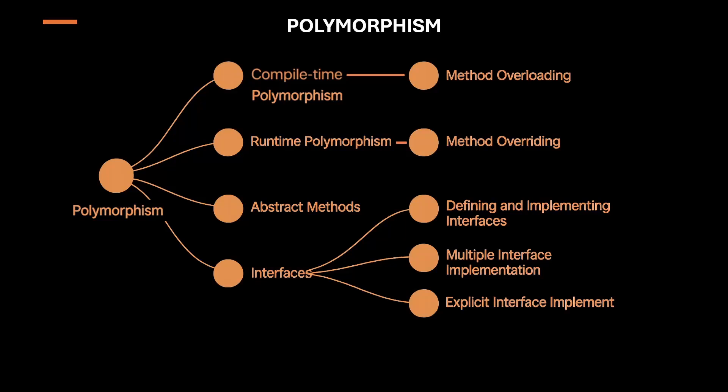Imagine being able to use a single command to perform multiple actions just by changing the context. This power and flexibility is at the heart of some of the most robust and scalable software ever built, and it all boils down to one fundamental concept in object-oriented programming called polymorphism.